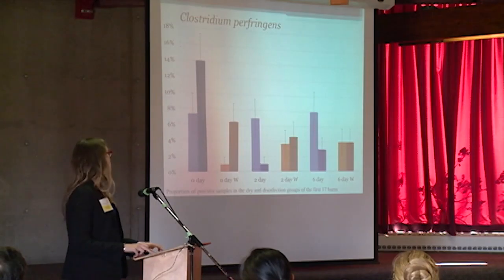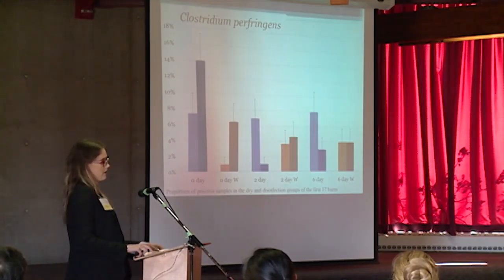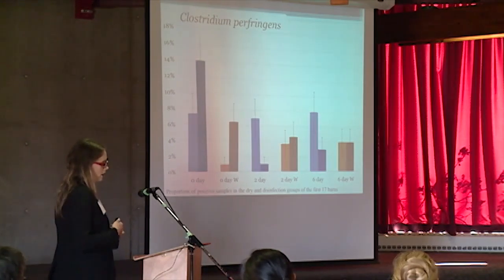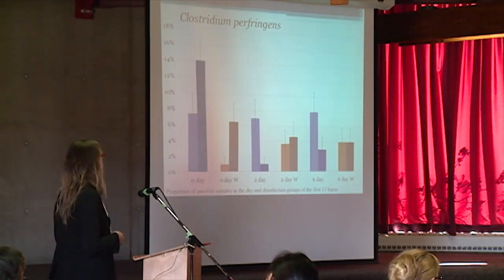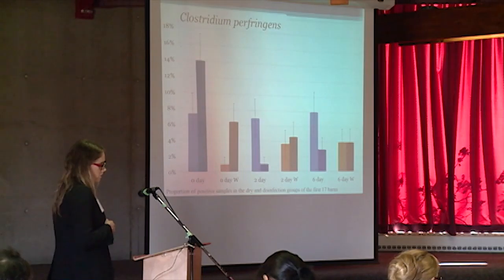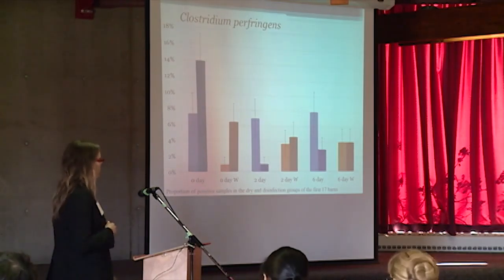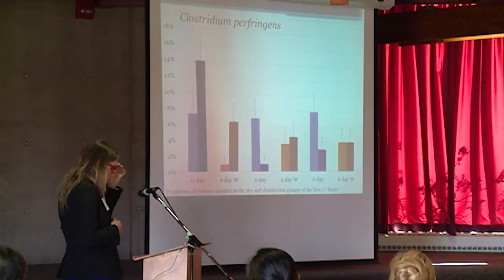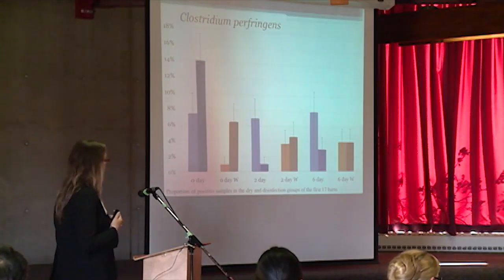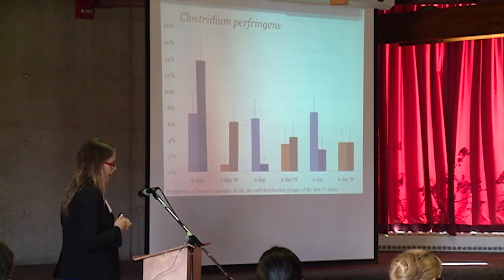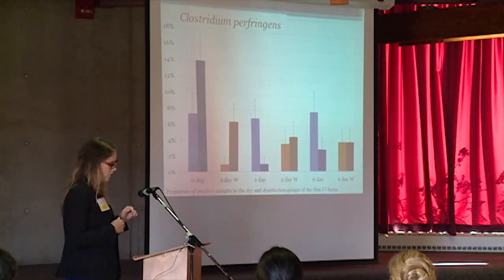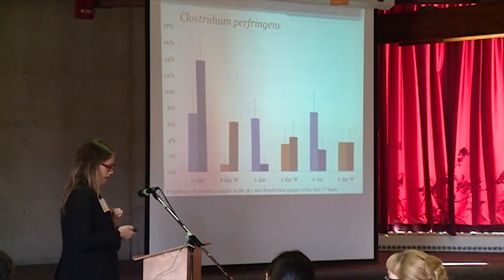This is the clostridium perfringens data. The y-axis now shows the percent of positive swabs found. In the dry cleaning group, both the concrete and wooden floors increased slightly relative to their baseline. Directly comparing wood and concrete floors, the concrete floors had a higher number of positive samples after six days. In the disinfection group, there was a decrease in positive samples over time, and this decrease is more noticeable on the concrete floors. From these results, disinfection and dry cleaning appear about equally effective on wooden floors, whereas disinfection on concrete floors is more effective.